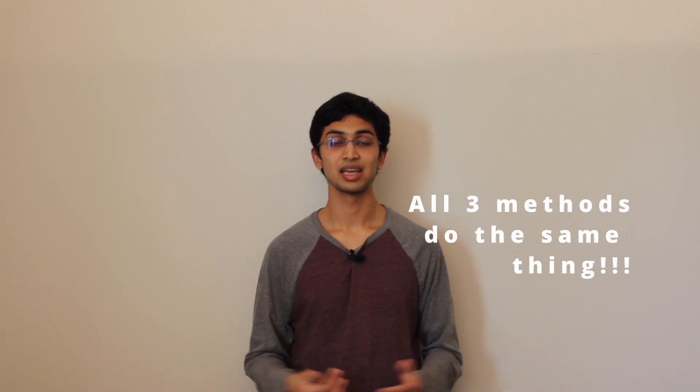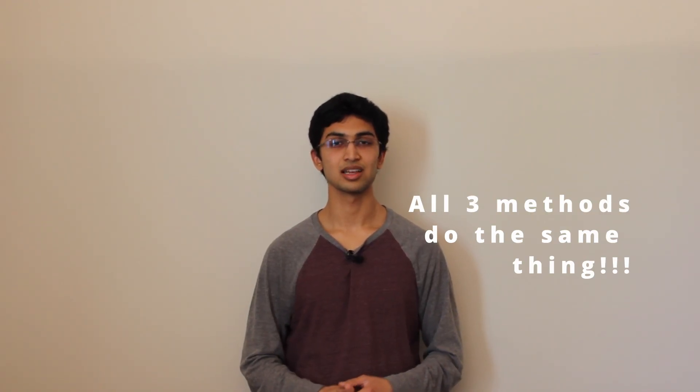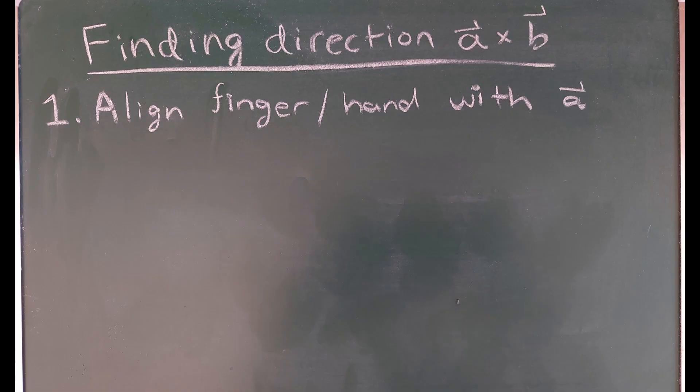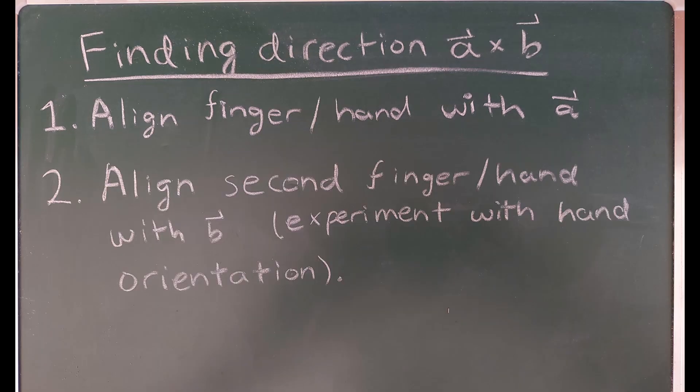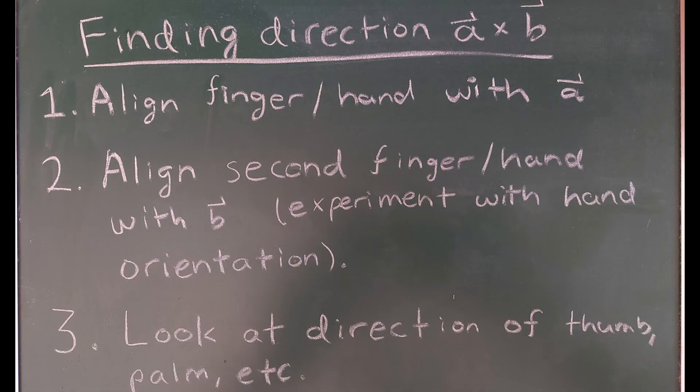All three right-hand rules are equally valid — they all gave the same results, and they're all doing the same thing using your right hand with different fingers and motions. The general framework is: (1) align a finger in the direction of vector A, (2) align another finger or hand in the direction of vector B — inverting or reorienting as needed — and (3) look at the direction of the resulting thumb or palm to get A cross B.